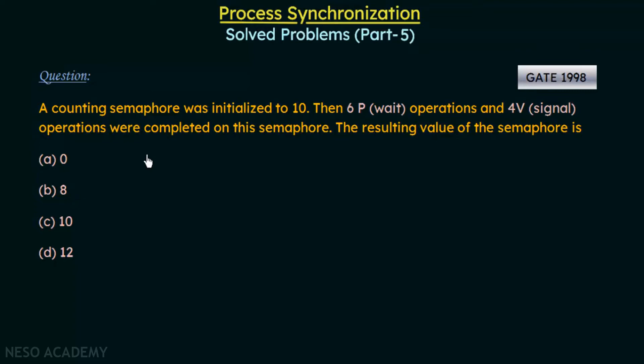Here we are using a counting semaphore whose initial value is set to 10, and then there are the P operations, which is known as the wait operations, which is performed six times, and then there is the V operation, which is the signal operation, that is performed four times. If these are performed, what will be the final resulting value of the semaphore? That is what we need to find out.